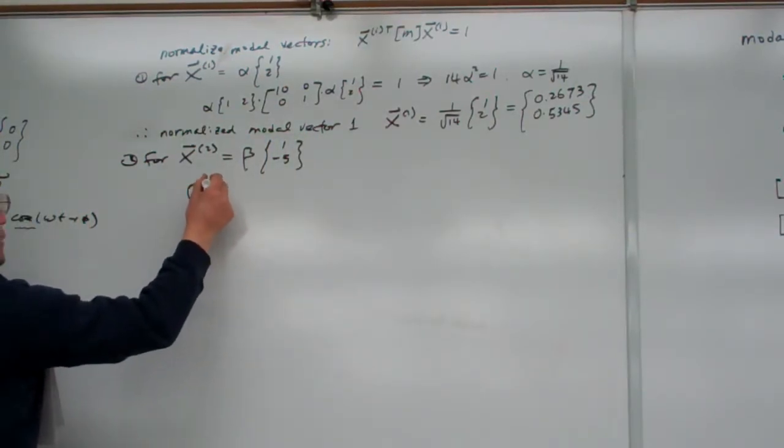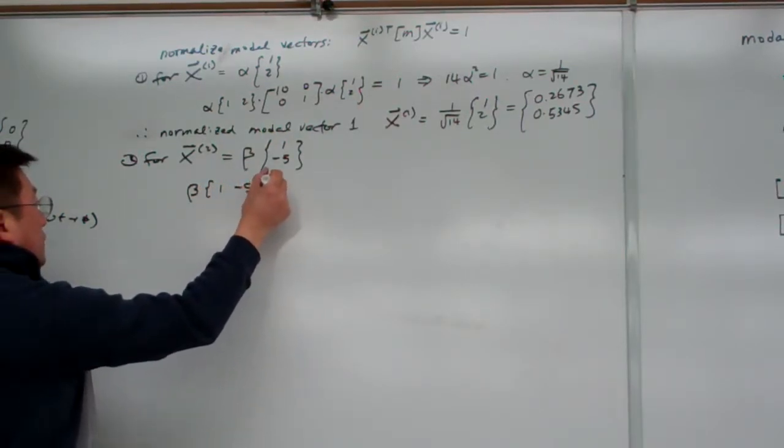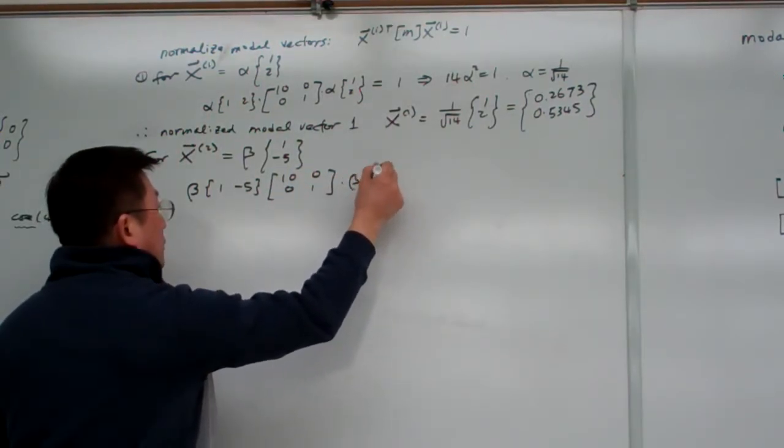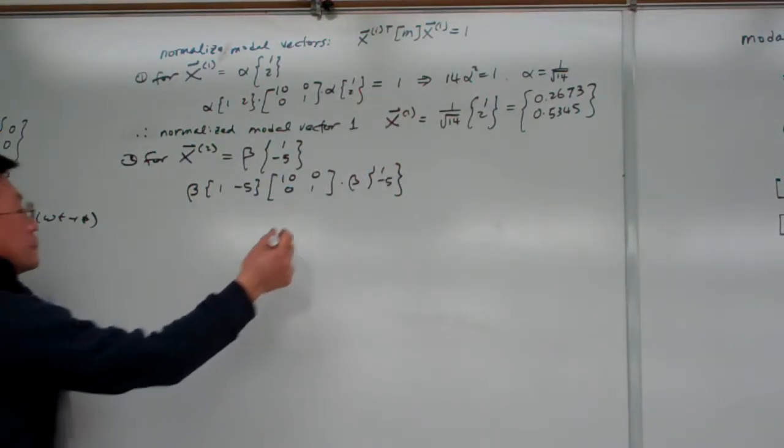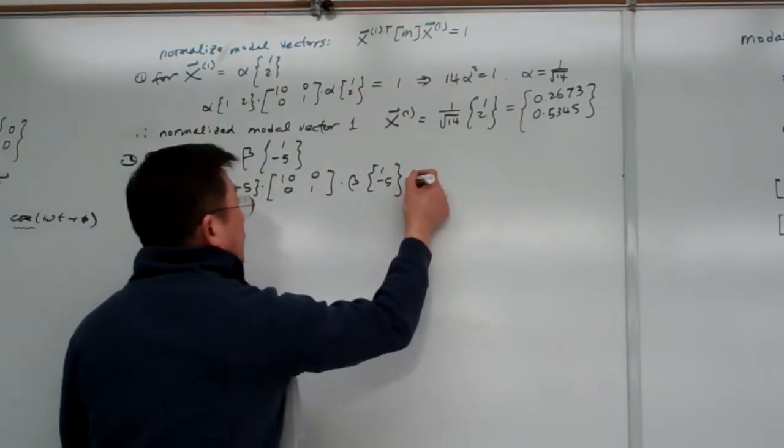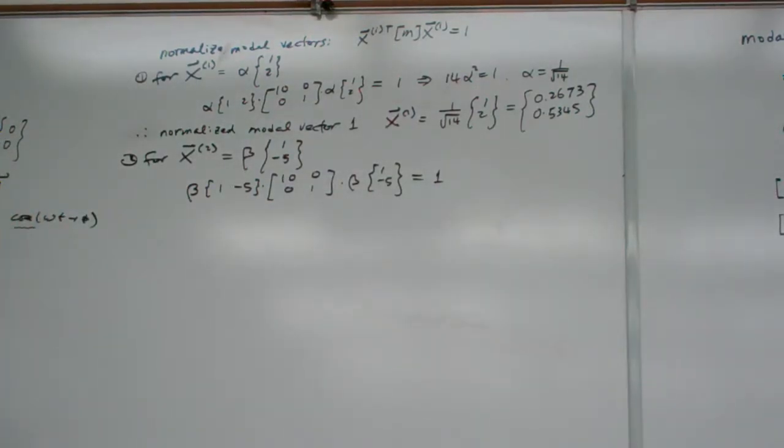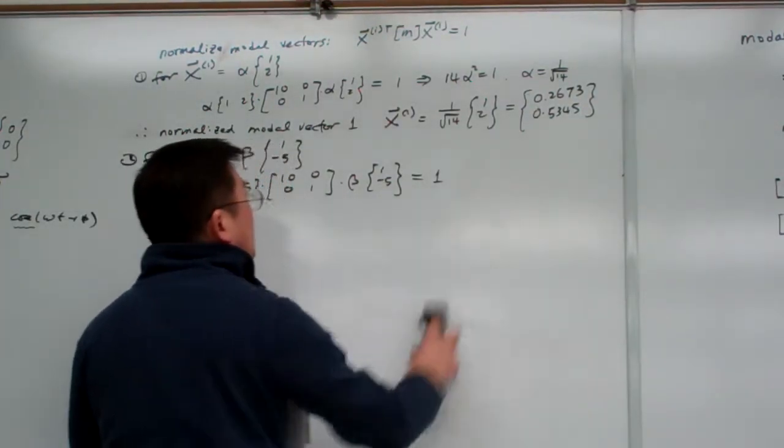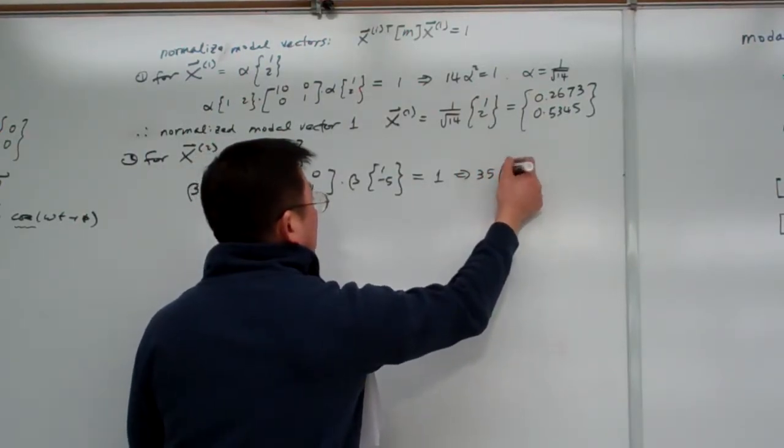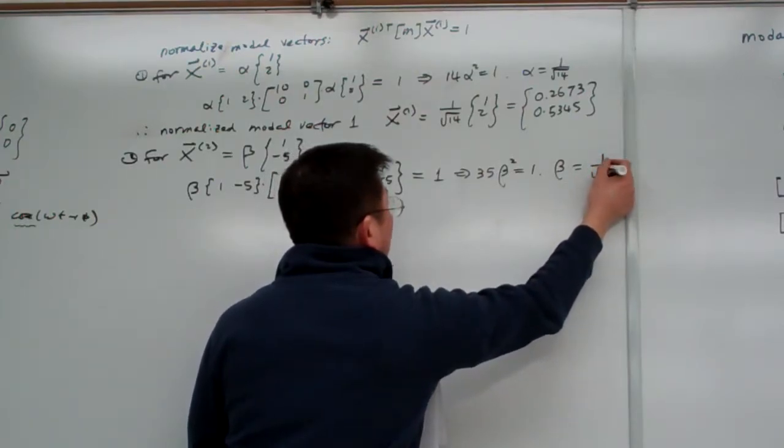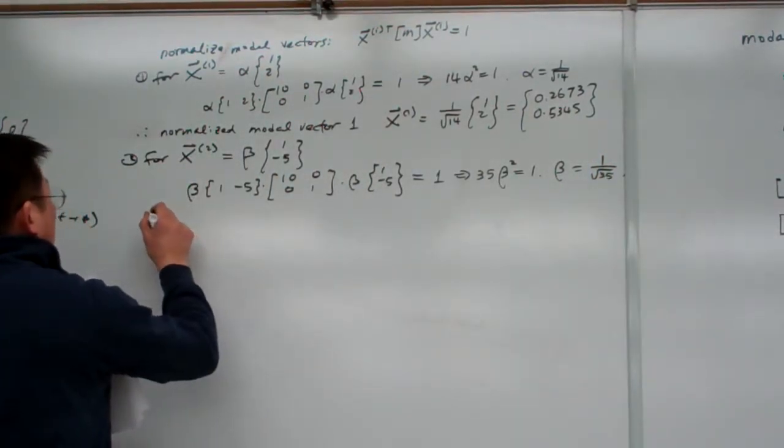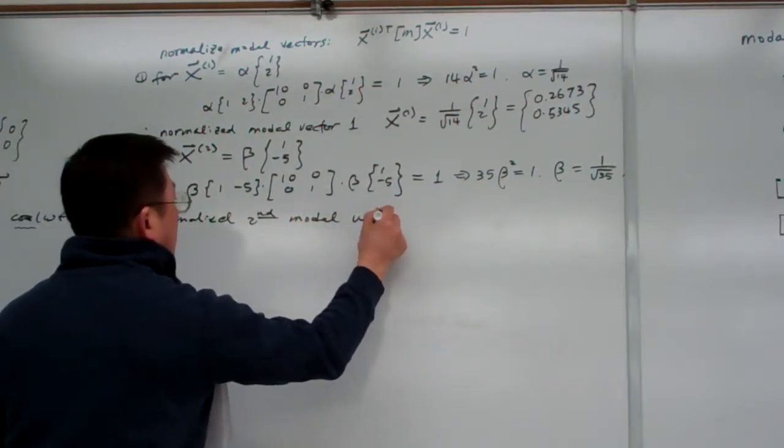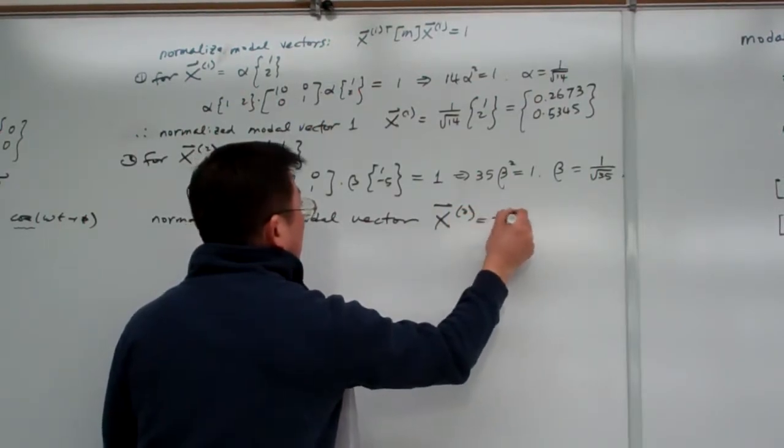So, this one must equal to 1. So, that's the requirement here. So, from here, we obtain 35β² equal to 1. So, therefore, β equal to 1/√35. So, therefore, the normalized second modal vector equal to 1/√35 times [1; -5].